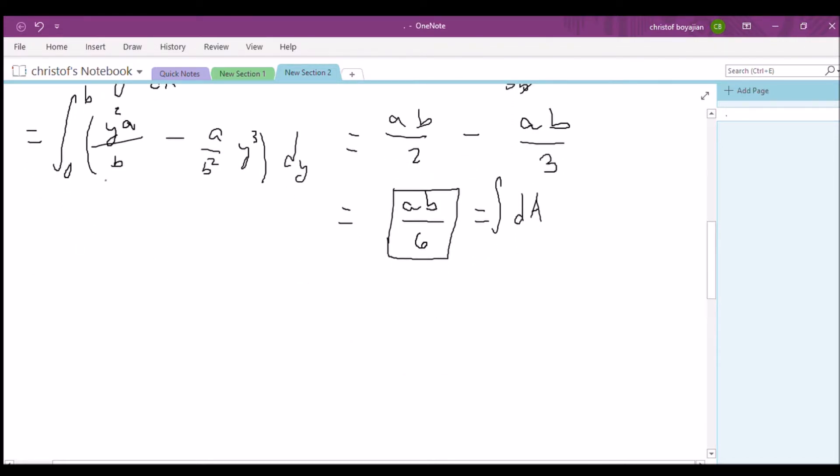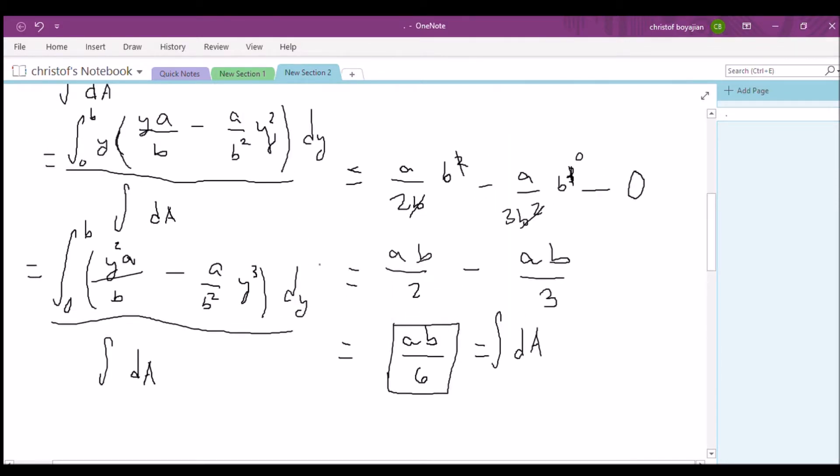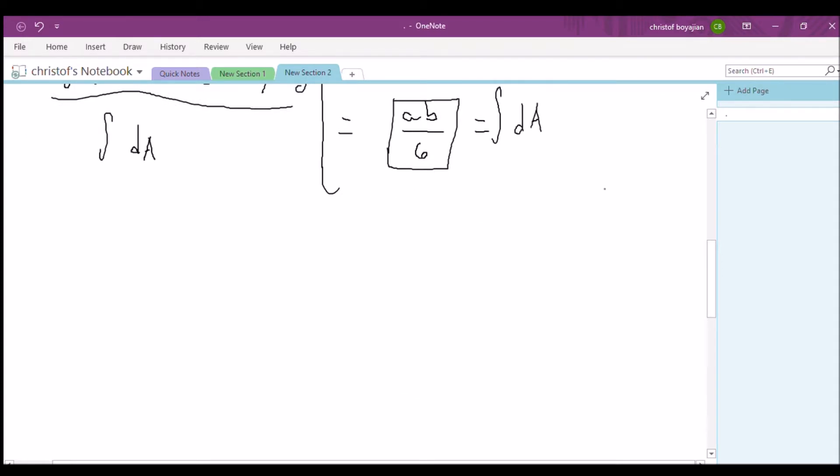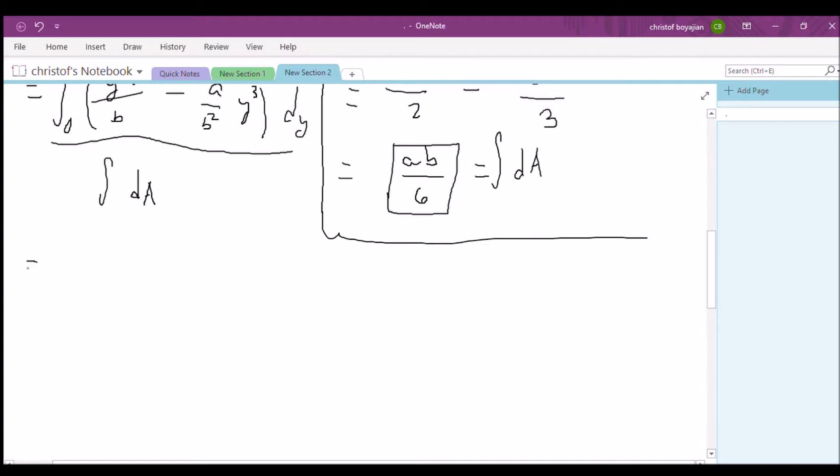So from 0 to b of y squared times a over b minus a over b squared times y cubed, all this with respect to dY, and all of this is divided by our integral of dA. Okay, let's go ahead and I'm going to draw a line to note that this is some other information that we've solved for in the previous video. So let's go ahead and solve for this. Let's just go ahead and integrate it.